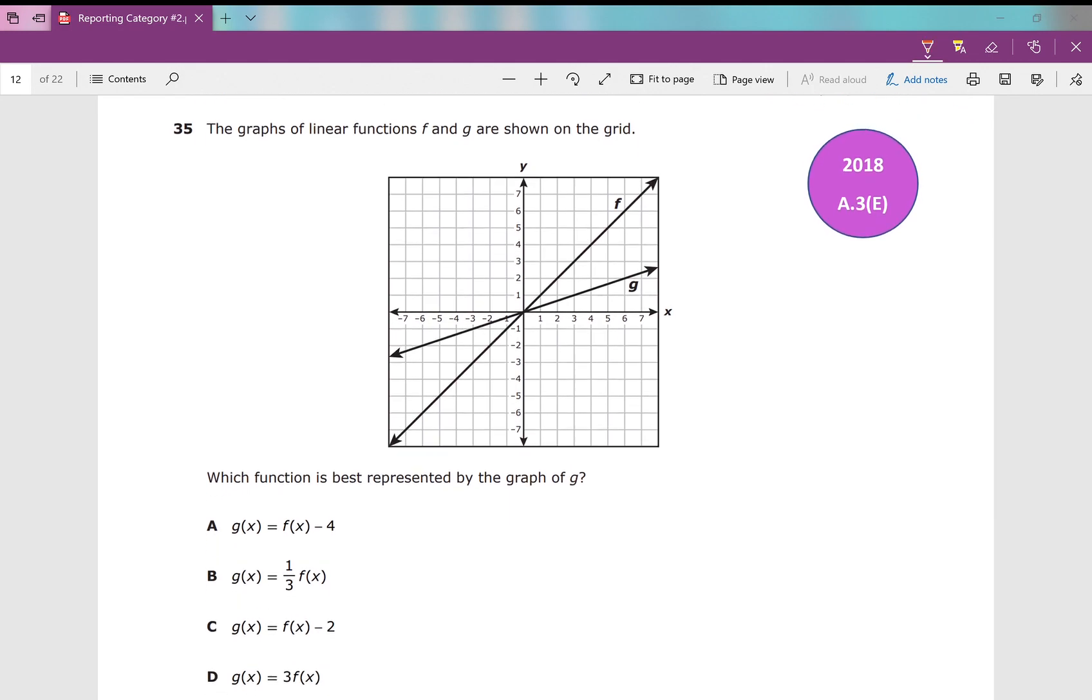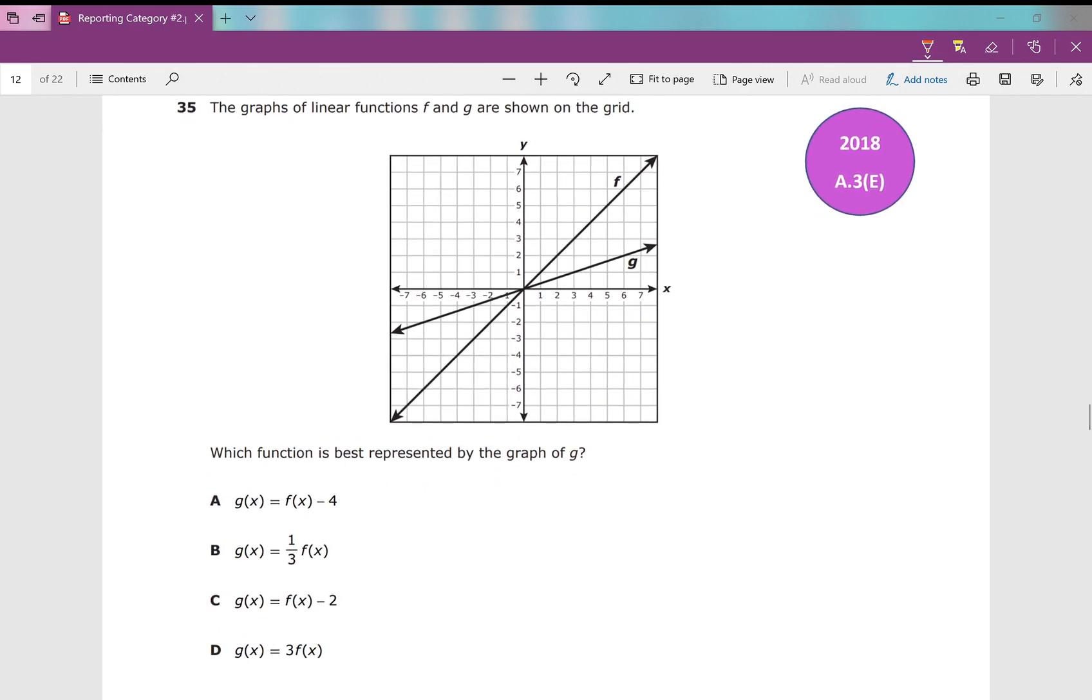The graphs of linear functions f and g are shown on the grid. Which function is best represented by the graph of g? Let's look at this. This is a tough question. A lot of students really struggle with this kind of stuff because they don't understand what they're looking at. g of x equals, well obviously f of x is in all of the equations that g of x equals. f of x in this case is what? My slope is one over one, so it's just x and my y-intercept is zero. So that's the equation of f of x. Well, what do you notice about g? What's my slope for g of x? It still has a y-intercept of zero, and the slope is rise one and run three, so it's one-third x.